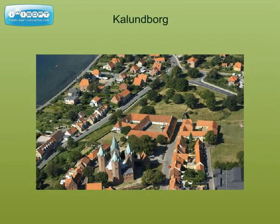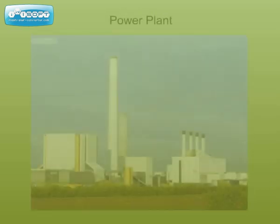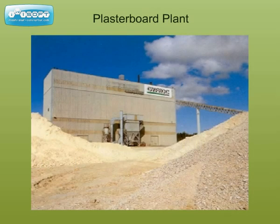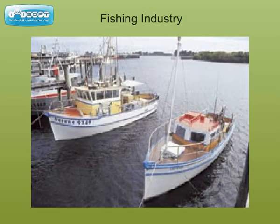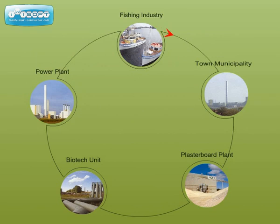The process of industrial symbiosis can be seen as a successful example of an industrial complex minimizing pollution and optimizing the use of various resources over the last three decades. The power plant, the plasterboard plant, the biotech unit, the fishing industry and the town municipality developed a method of sharing each other's waste to mutual advantage. This process of symbiosis gave rise to the thought that the industrial system could emulate the natural ecosystem, where the waste of one activity often becomes the feed for another. The aim of the industrial system should be to grow with less use of resources.